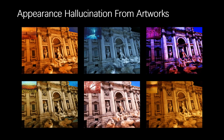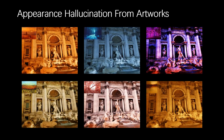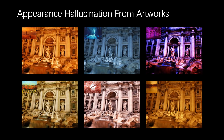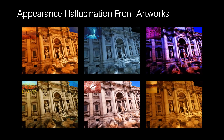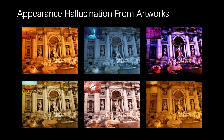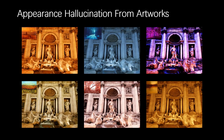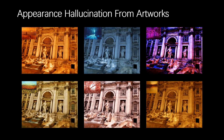Furthermore, we can even transfer appearance from a radically different scene, where there is a large domain gap between example images and scenes. As shown here, we can hallucinate the appearance from artwork onto the Trevi Fountain at different views.